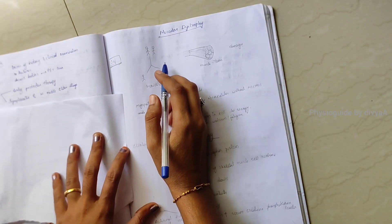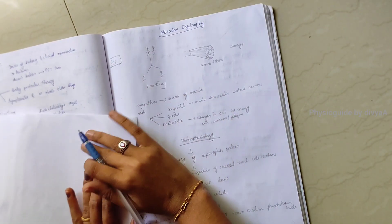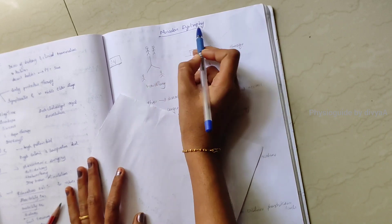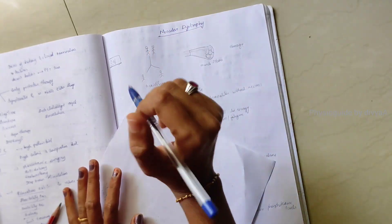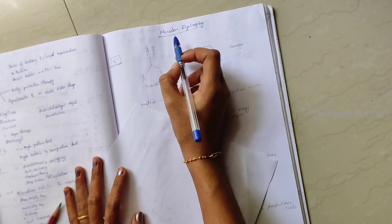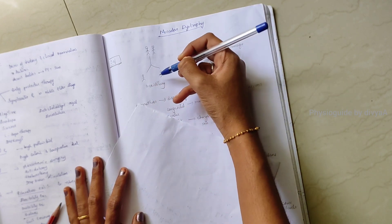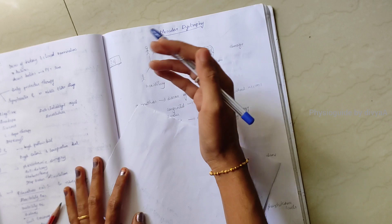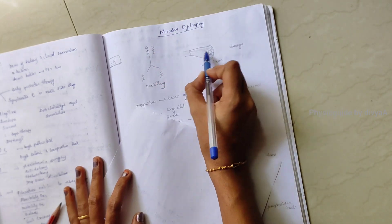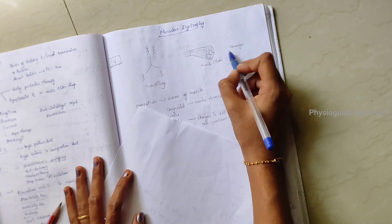Hello people, welcome to my channel Physio Guide by Divya. Today I am going to teach an important topic, that is muscular dystrophy. What is muscular dystrophy? It is a group of hereditary diseases, meaning from families to next generation it transfers the disease, in which the muscle fibers are usually sustained to damage.